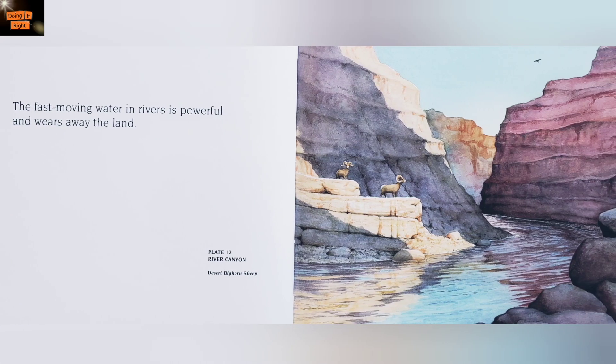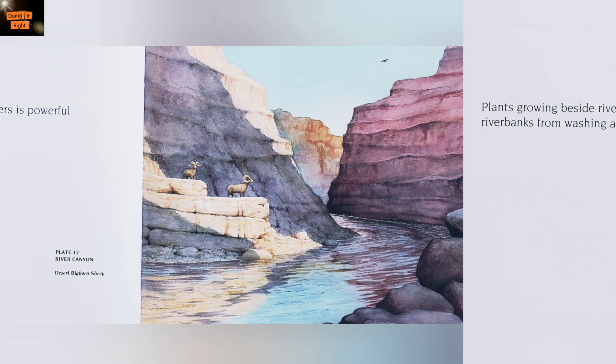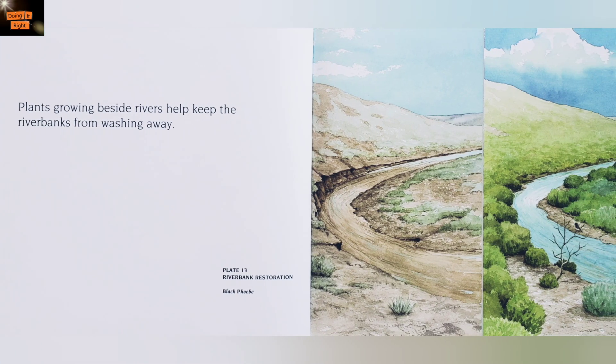The fast moving water in rivers is powerful and wears away the land. Plants growing beside rivers keep healthy river banks from washing away.